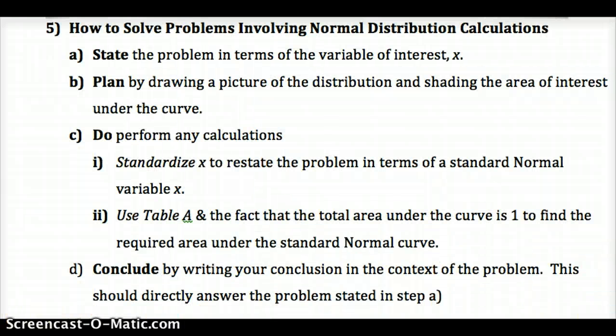To solve problems involving normal distribution calculations, you'll first state the problem. We'll use state, plan, do, and conclude - just like every other time. We'll continue to use this throughout the year. State the problem in terms of the variable of interest, x. That means you're stating what question we're trying to answer. Plan by drawing a distribution and shading the area of interest. Draw the normal curve, put a line where the z-score is, and shade the area. Do we want greater than or less than that z-score? If it's greater, you'll take the value from table A and subtract from 1. If it's less than, you can just use that value from table A.